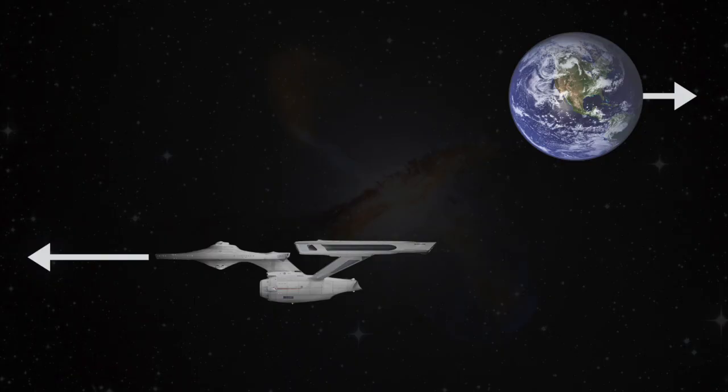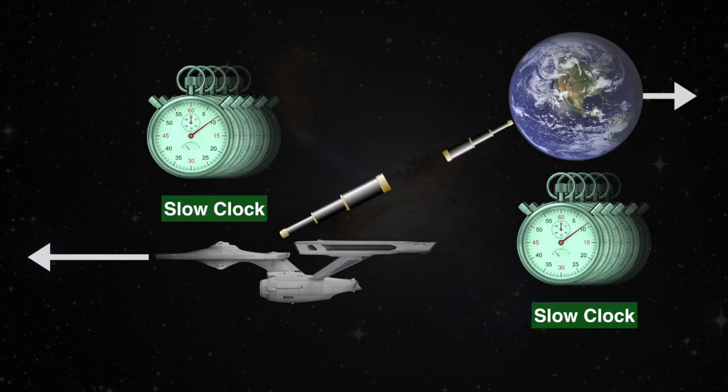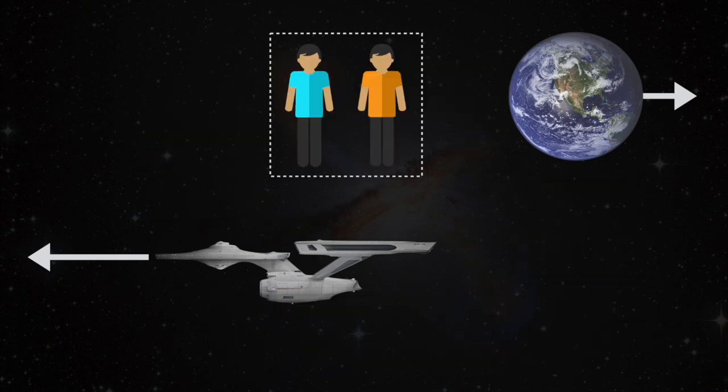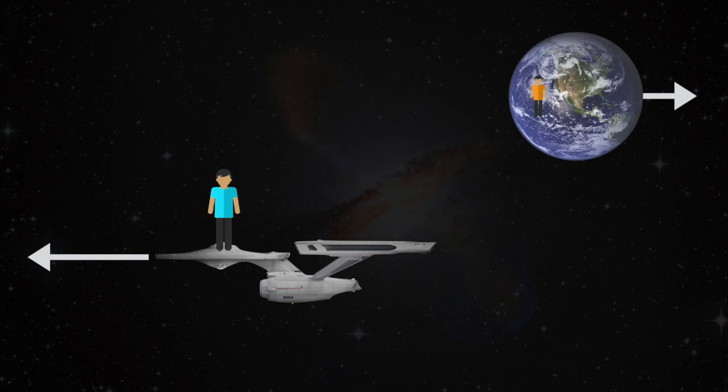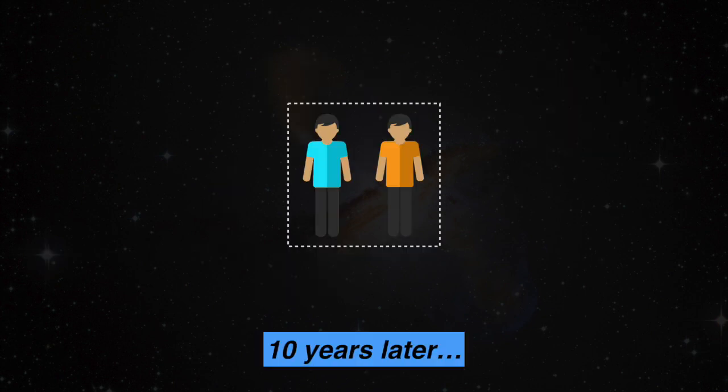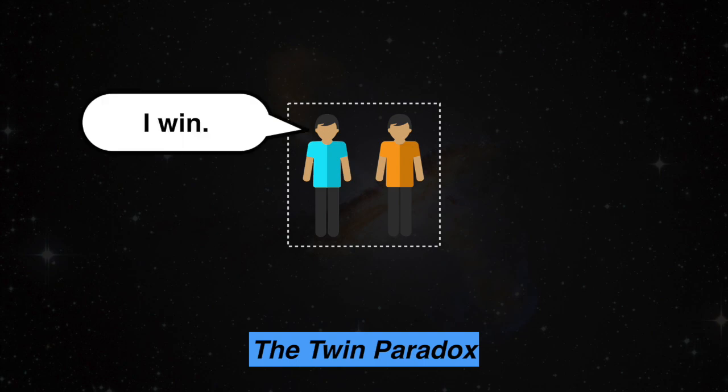You might ask, if astronaut and Earthlings see each other's clocks running slowly, then who's right? Say two twins. One traveling on the spaceship, the other one staying on Earth. Meet up again after 10 years. Who's younger? This question is called the twin paradox, and its explanation is a story for another time. The answer is, the twin in the spaceship will be younger.